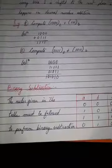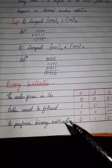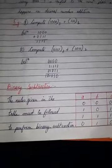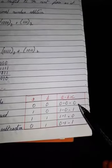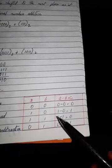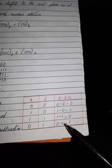Binary subtraction. The rules given in the table must be followed to perform binary subtraction. The expression is A minus B equals C. When A is 0 and B is 0, then 0 minus 0 is 0. When A is 1 and B is 0, then 1 minus 0 is 1. When A is 1 and B is 1, then 1 minus 1 is 0. And when A is 0 and B is 1, then 0 minus 1 also represents 1. So 0 minus 0 is 0, 1 minus 1 is 0, 1 minus 0 is 1, and 0 minus 1 is 1.